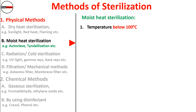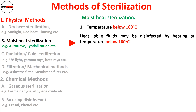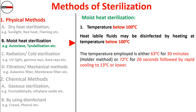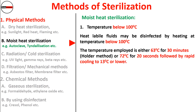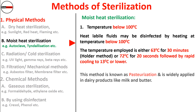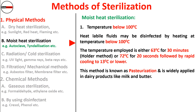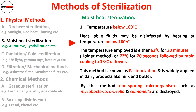At temperatures below 100°C: heat-labile fluids may be disinfected by heating below 100°C. One method is 60°C for 30 minutes, called the holder method. Another is 72°C for 20 seconds followed by rapid cooling to 30°C or lower — this method is known as pasteurization, widely applied to dairy products like milk and butter. By this method, non-sporing microorganisms such as Mycobacteria, Brucella, and Salmonella are destroyed.